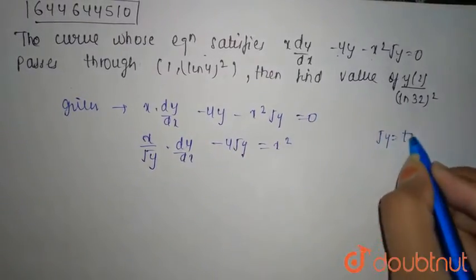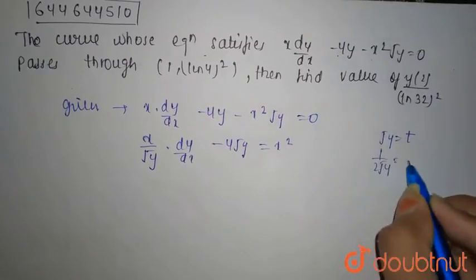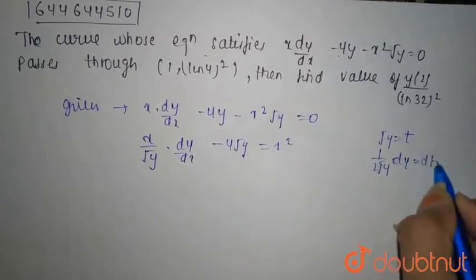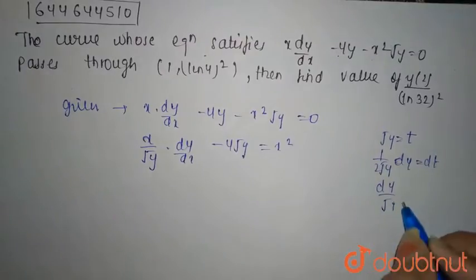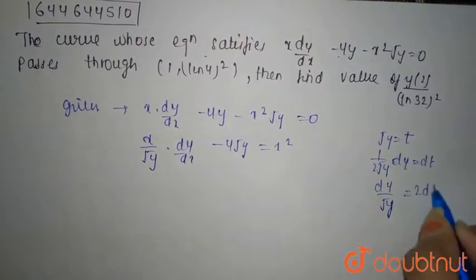Let root y equals t, so it comes out to be 1/(2 root y) equals dt. Therefore, dy/root y is nothing but 2 dt.